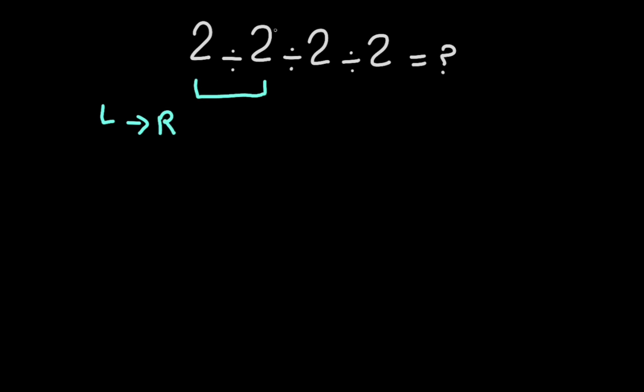Now, 2 divided by 2 gives us 1. 1 divided by 2 gives us 1. Excuse me, 1 divided by 2 gives us 1 over 2.